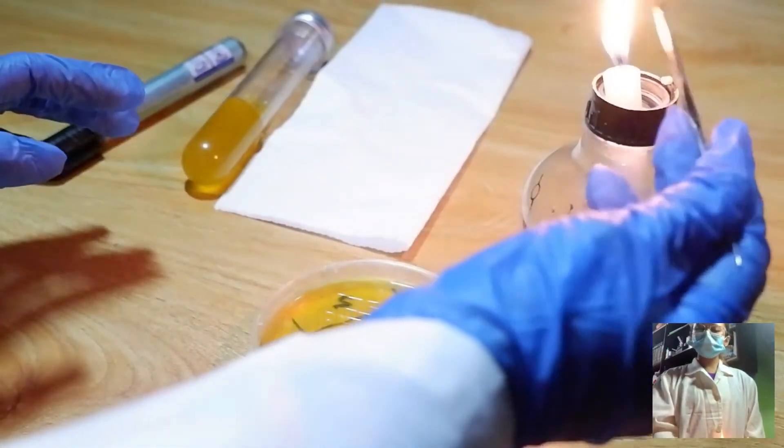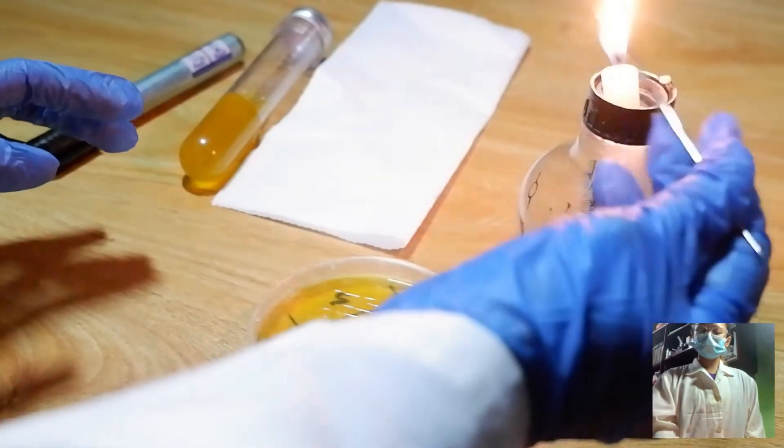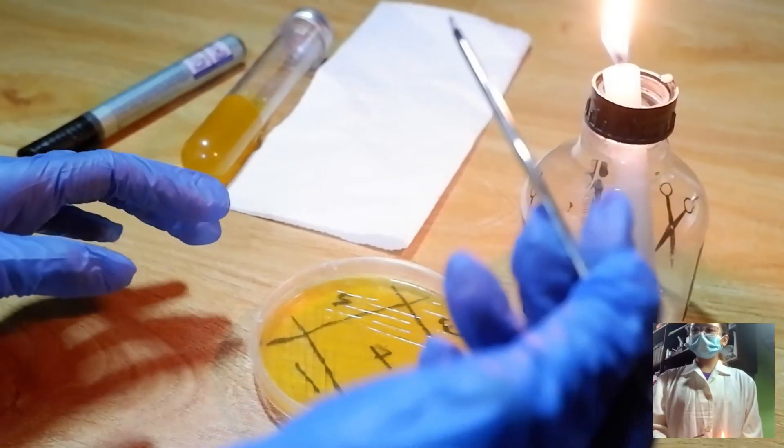Now, let it cool down for 5 to 10 seconds. We will have to sterilize the loop again, so flame it here, and allow it to cool for 5 to 10 seconds again.